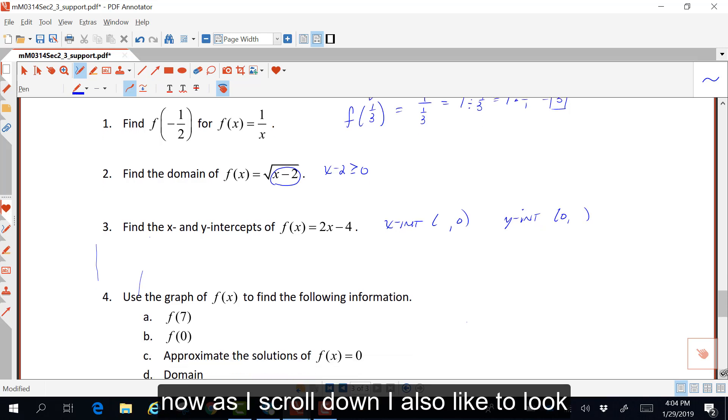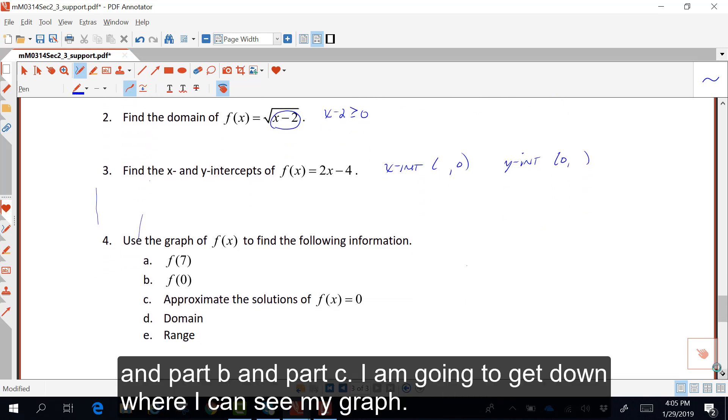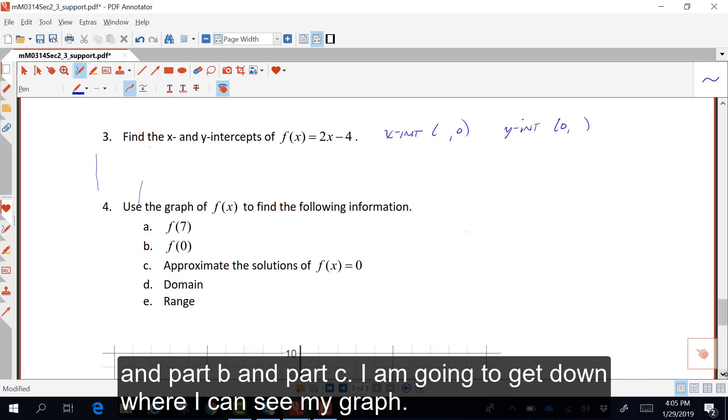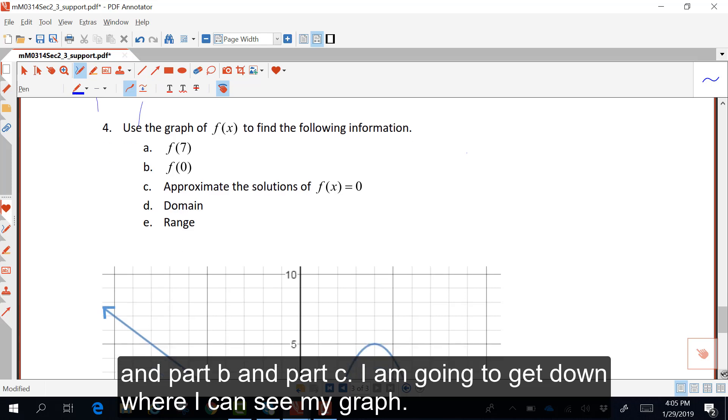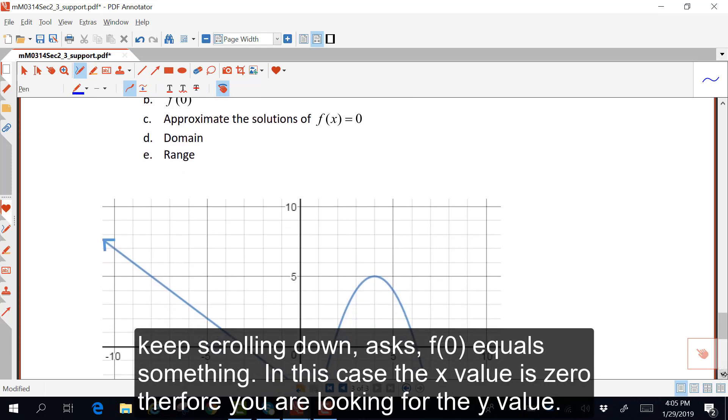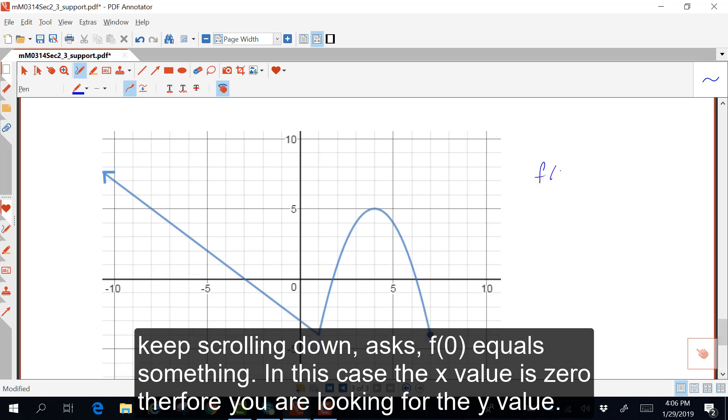Now, as I scroll down, I'd also like to look at part b and part c. So, I'm going to get down where I can see my graph. Part b says, I'll keep scrolling down, asks f of 0 equals something. Well, in this case, your x value is 0.